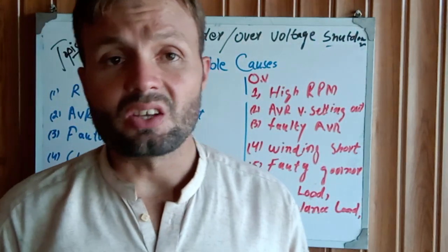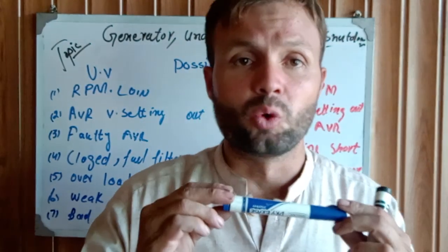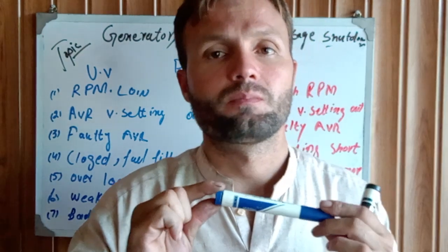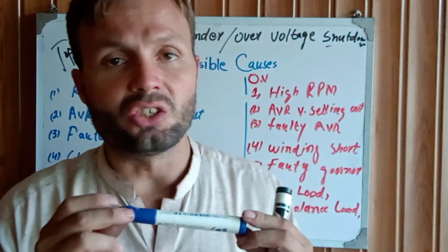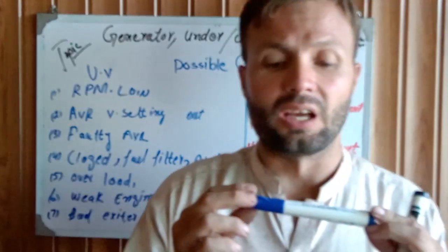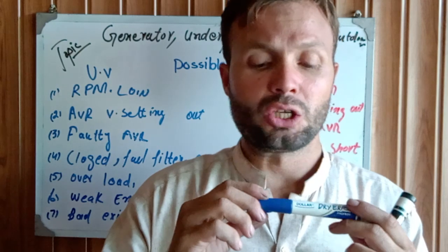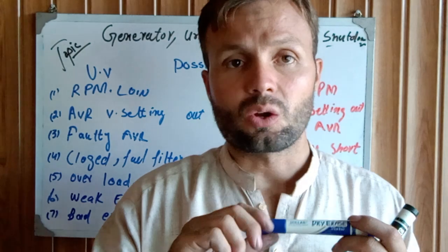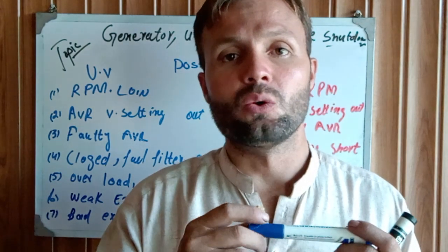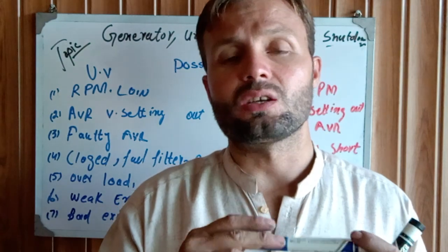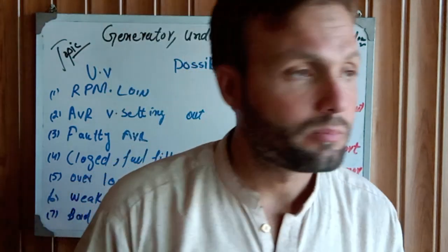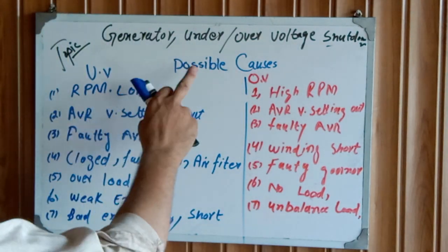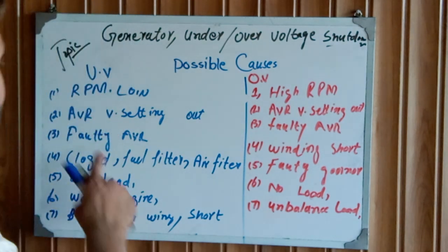The engine RPM is set using the engine fuel injection pump. On the diesel engine fuel pump linkage, there are bolts — when you tighten the nut or bolt clockwise, the RPM increases, and when you release it counter-clockwise, the RPM decreases. First of all, you need to set the correct rated RPM for your engine according to the engine specification.